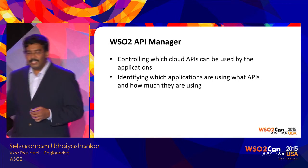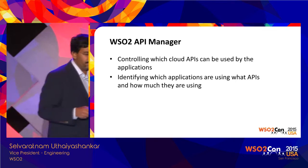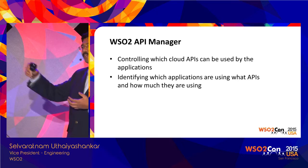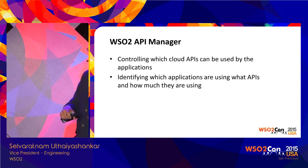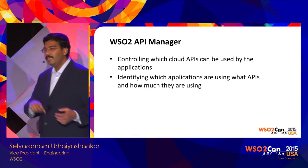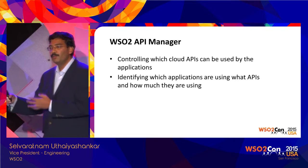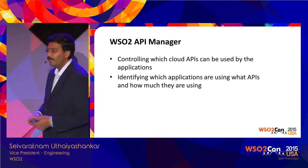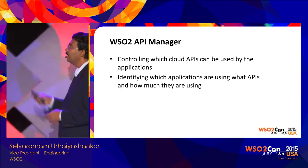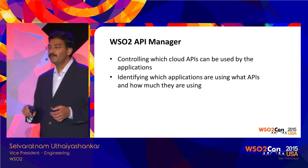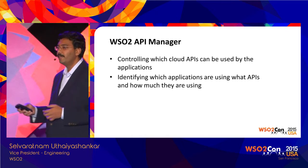The WSO2 API Manager can help achieve this. It allows you to define which public APIs can be used internally within your organization. By exposing only approved APIs through the API Manager, you restrict what developers can use to build applications — ensuring governance and policy compliance around external service consumption.